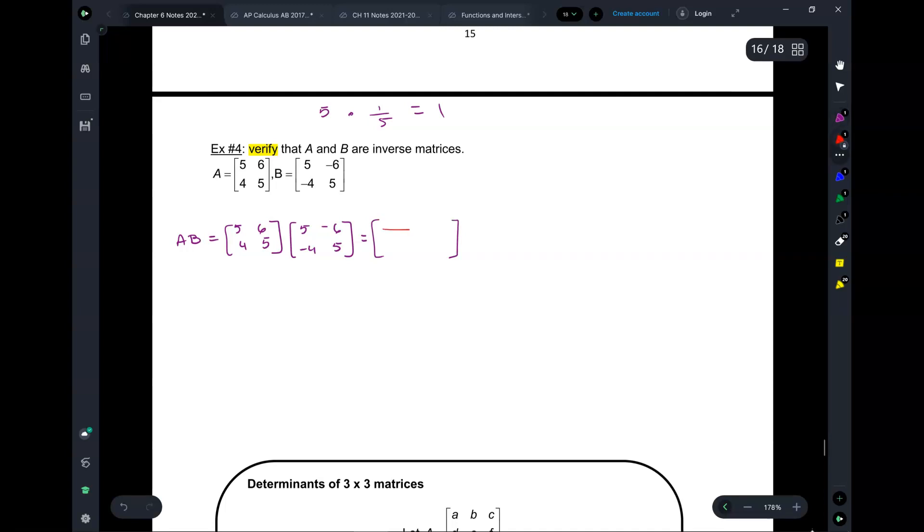So if I want this one, that's row 1, column 1, and that's going to be 25 minus 24. Sorry, let me write it out. So we got 25 minus 24 for the first one, which is 1. Then I have negative 30, positive 30, which is 0.